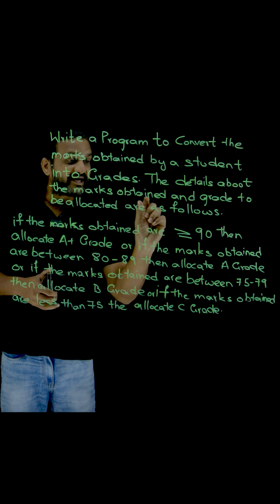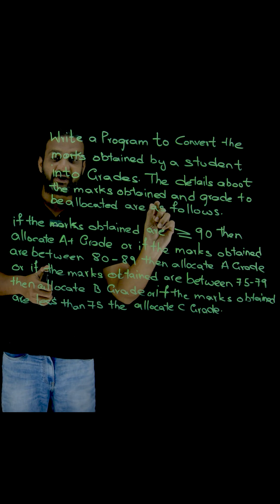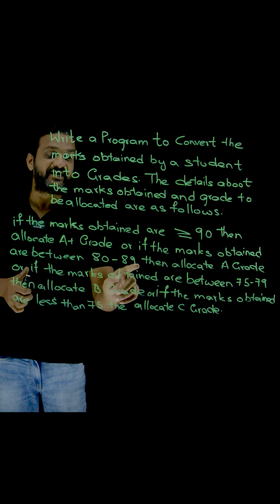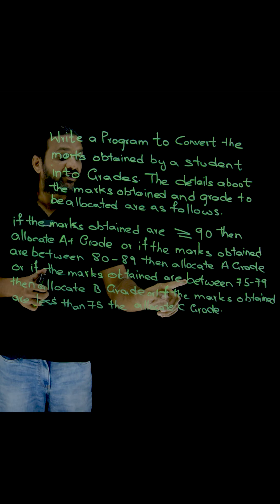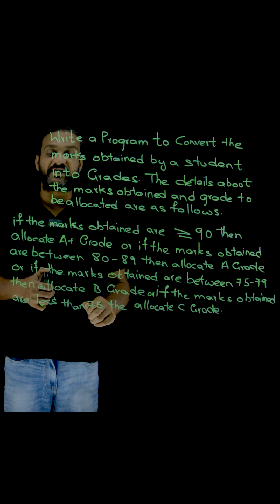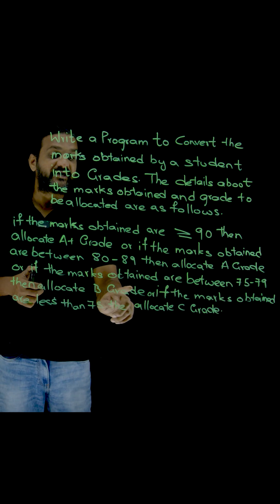Or if the marks obtained are between 80 and 89, then allocate A grade. Or if the marks obtained are between 75 and 79, then allocate B grade.